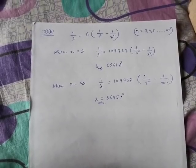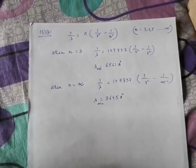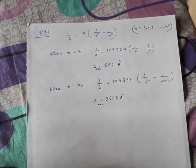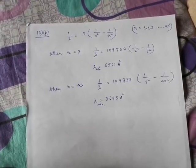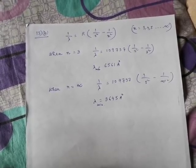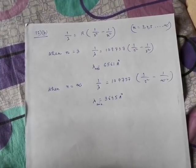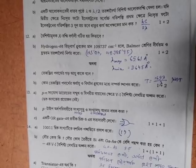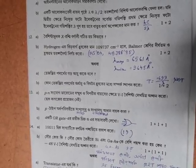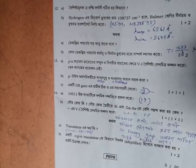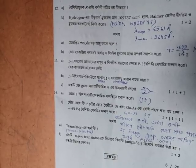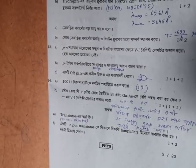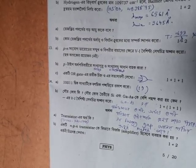The formula: 1 by lambda is equal to R into 1 by 2² minus 1 by n². If it is maximum, it is equal to 3. If it is minimum, it is equal to infinity. The value of B is equal to 0.693 by lambda. When B is equal to 0.693 by lambda, it has equal to electrons — the 4A is a decimal.